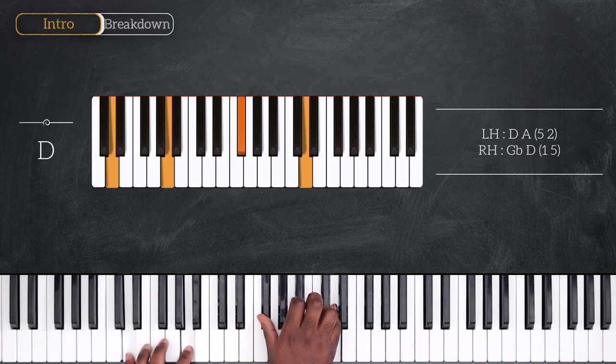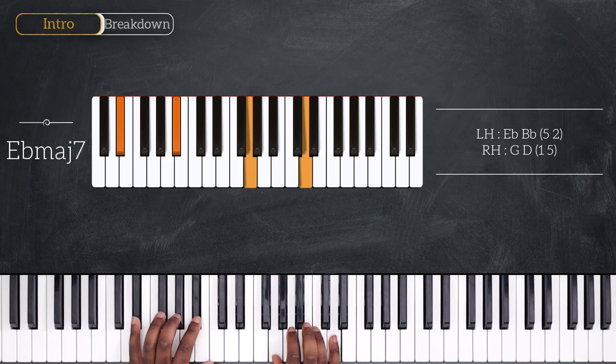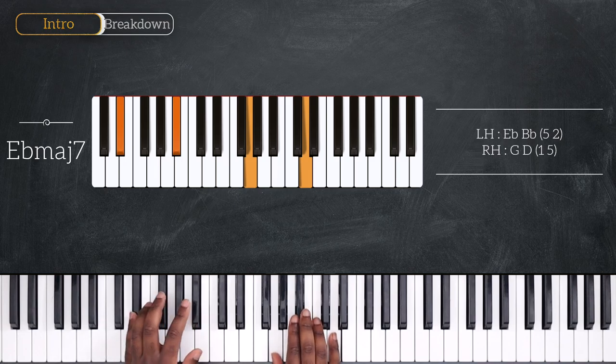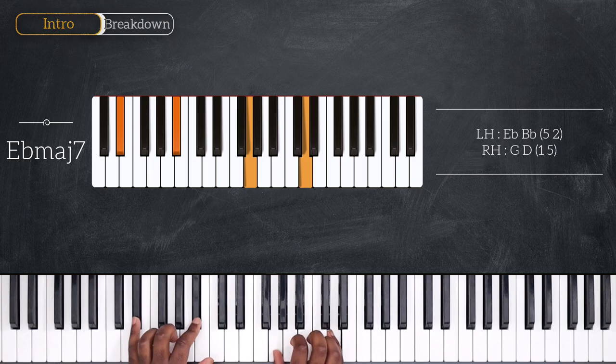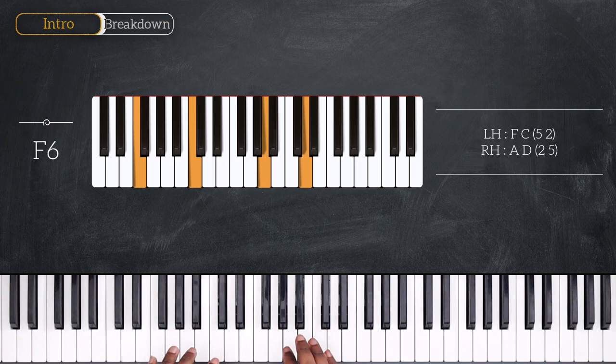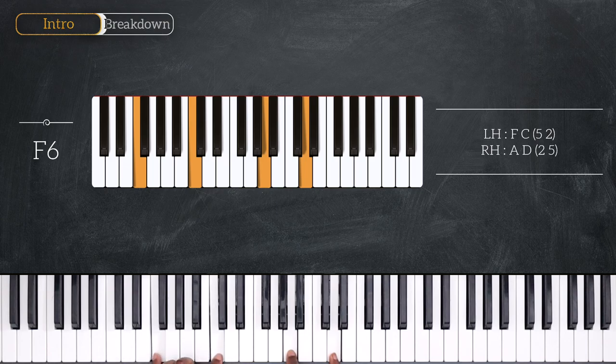So from here we're going to move up by one half step to play Eb major 7, Eb, Bb, G and D. And then move up by one whole step to play F6. F and C, A and D.